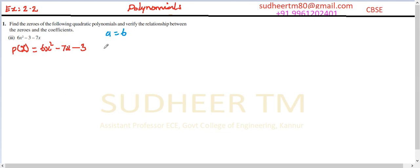So we must write the coefficients first. I have rearranged the given polynomial to standard form. A is equal to 6, B is equal to minus 7, and C is equal to minus 3.